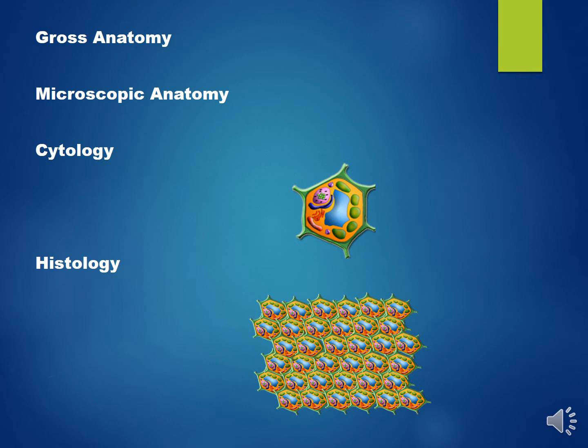Gross anatomy is the study of macroscopic anatomical features, or features visible without a microscope. Microscopic anatomy studies the body, organs, tissues, and cells by utilizing a microscope. Cytology is the study of cells, and histology is the study of tissues.